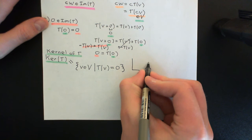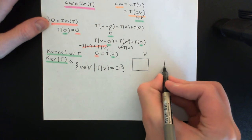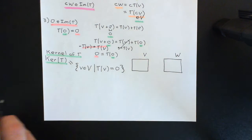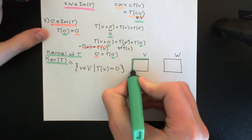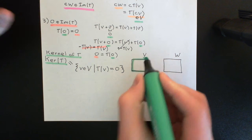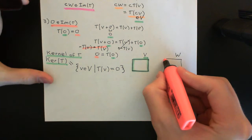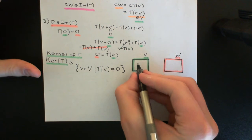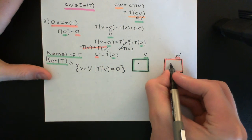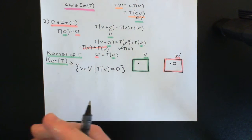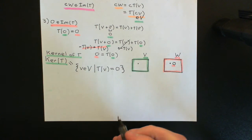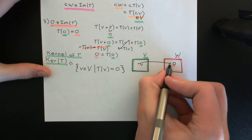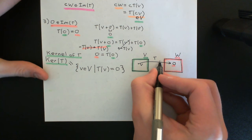Drawing a picture here: if we have our domain vector space capital V, and our codomain vector space capital W, and let's colour them in — the domain vector space is denoted in blue and our codomain vector space will be denoted in red. Then this is all the vectors in the domain vector space which are mapped onto the zero vector in the codomain vector space. Here is the zero vector in our codomain vector space, underlined in red.